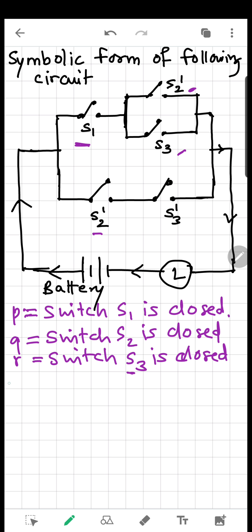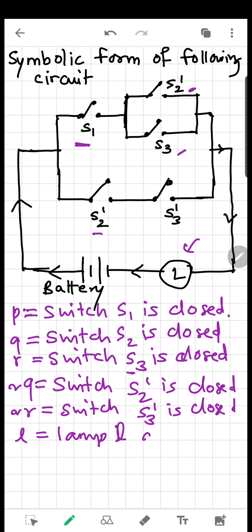So that's why we can define, let's say, NOT Q as switch S2' is closed, which already says that S2 is open, right. And what is NOT R? Switch S3' is closed. Now we want to define the output because output is the lamp L glows or not. So lamp L is lamp L glows.